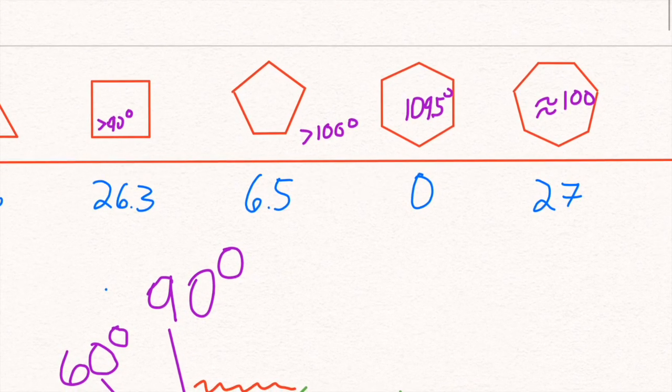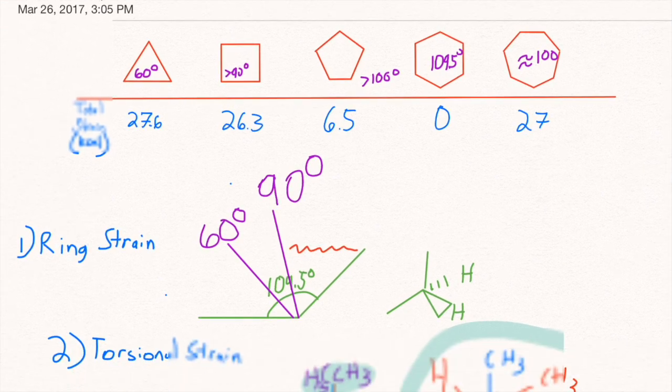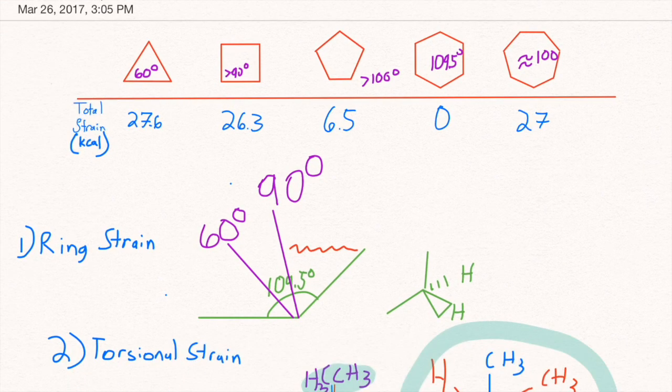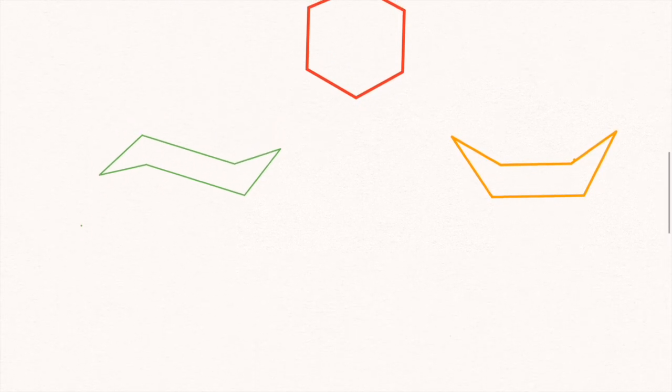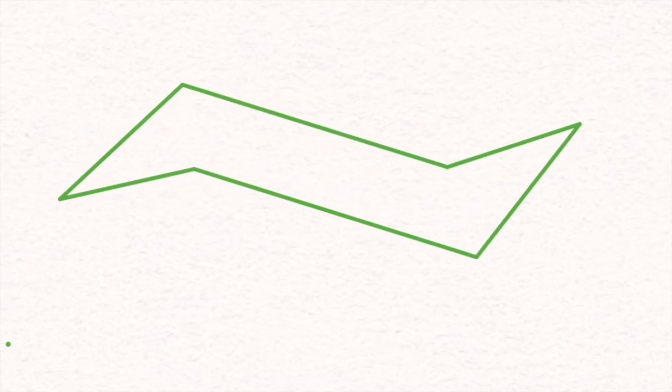Cyclohexane is unique because it has almost no strain in its most stable conformation, which is the chair conformation here. When we have six carbons in a ring, they can all twist perfectly in that chair conformation, which looks a lot like this model here. When using our 3D space, being able to go up and down, these carbons actually make 109 degree angles.